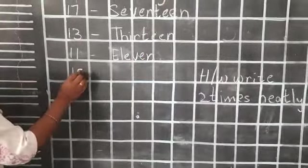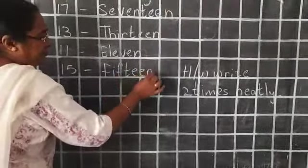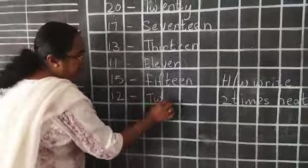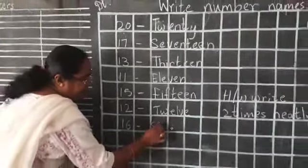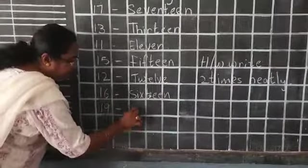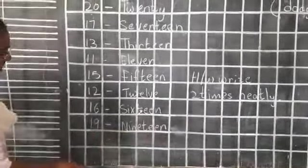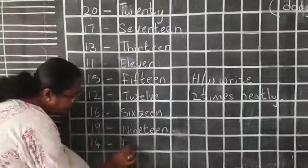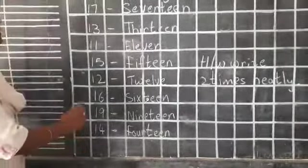Then 15, 12, 16, 19, 14, 18. Okay children.